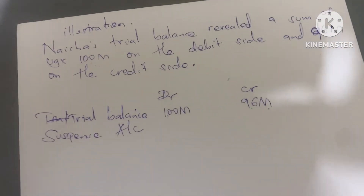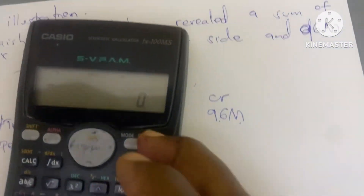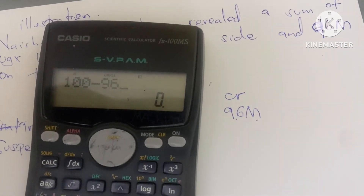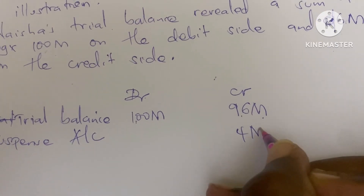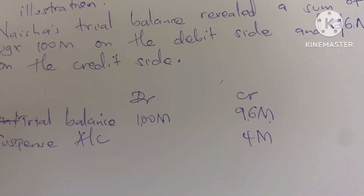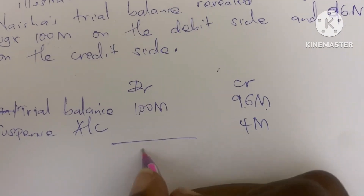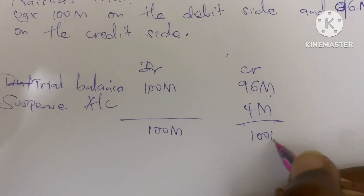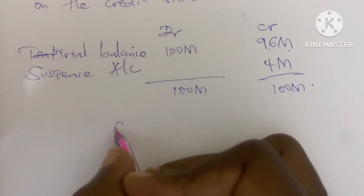We are going to introduce the suspense account on the lower side — the credit side — and write the difference. 100 minus 96 is 4M, so the suspense account is going to be 4M, so that both sides can balance: 100M on each side.